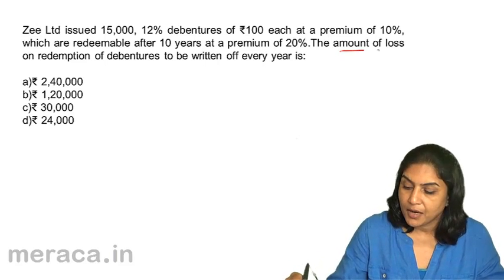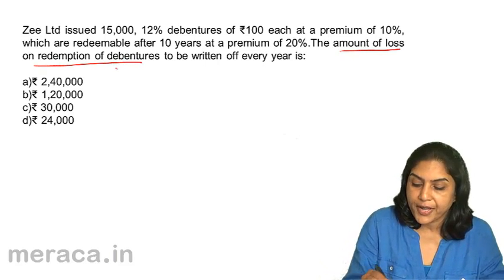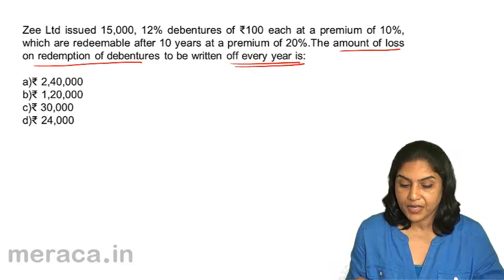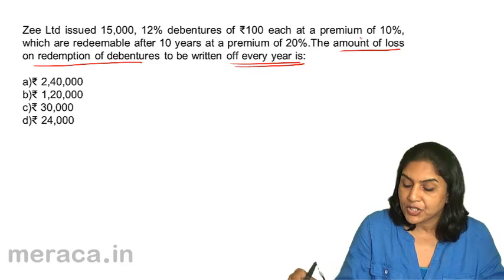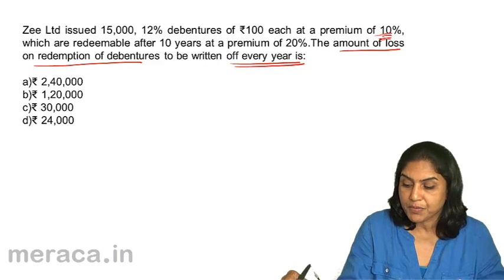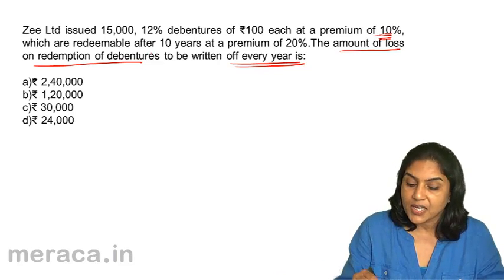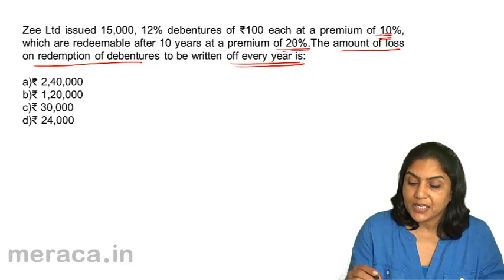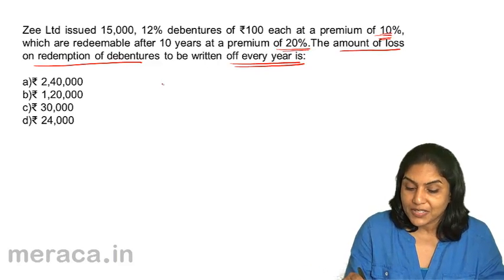The amount of loss on redemption of debentures to be written off every year. What is our loss on redemption? The 12% debentures are being issued at a premium of 10% — this is not a loss. This is a securities premium; this is a profit. These are redeemable after 10 years at a premium of 20%. The 20% is on the face value.